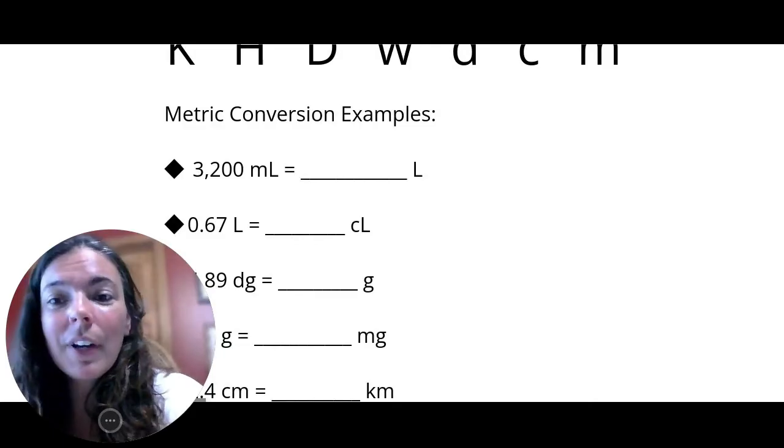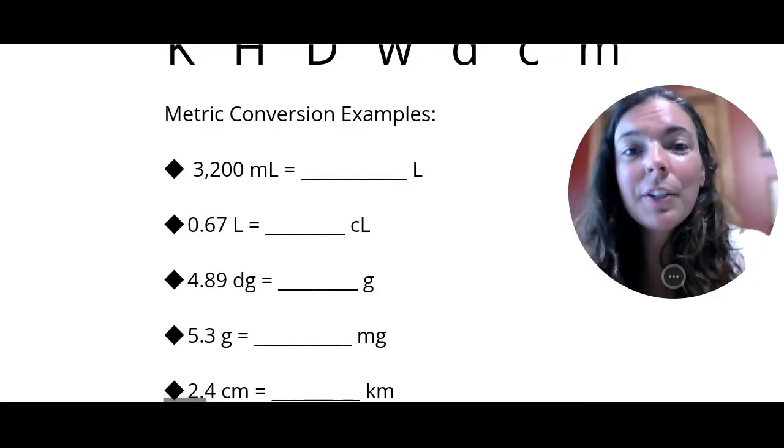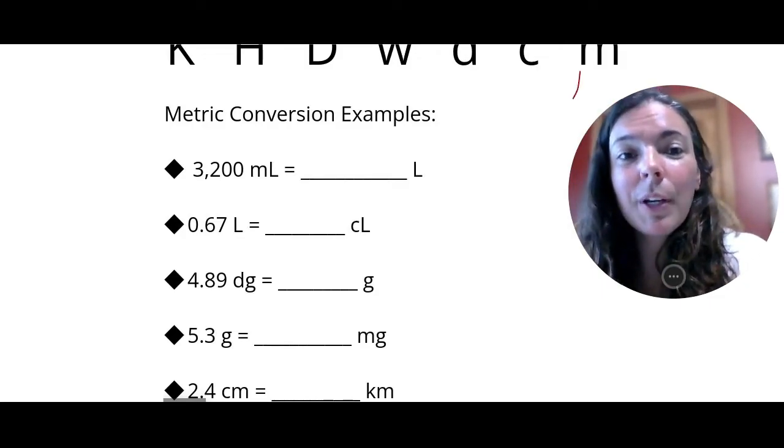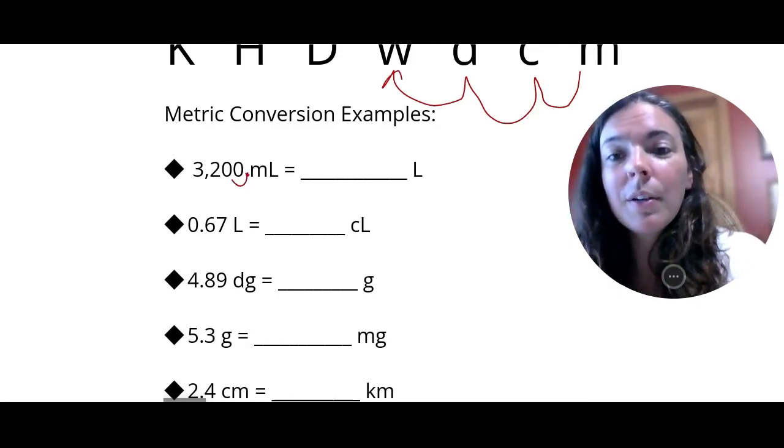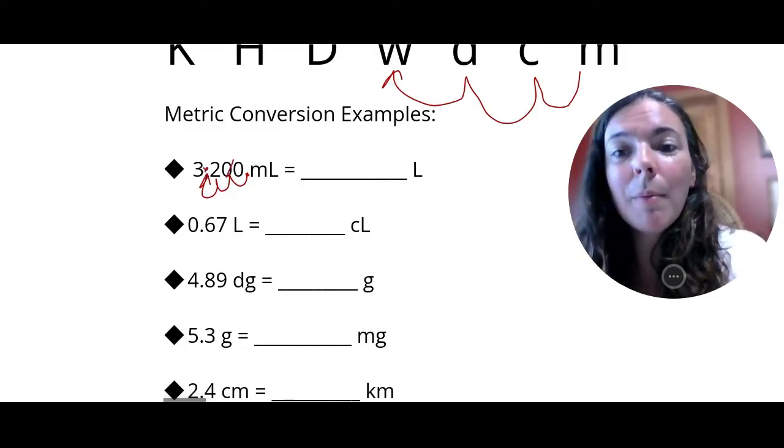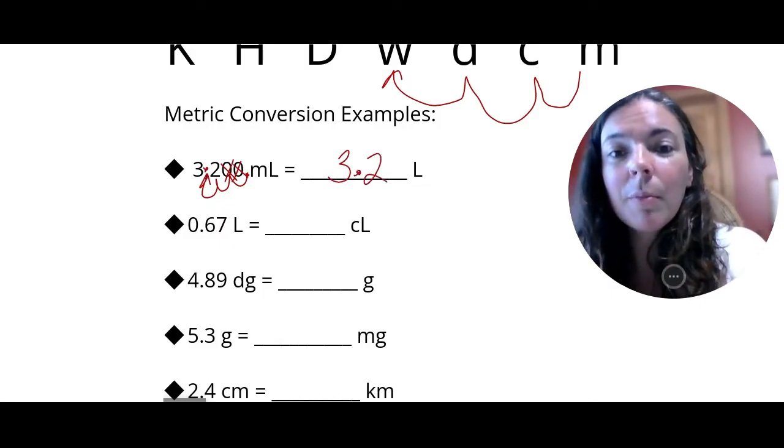Again, we've got King Henry died while drinking chocolate milk. Let's start with 3,200 milliliters. If I'm at milli and I need to go to my whole unit, I'm going to go one, two, three times to the left. So my decimal is here, one, two, three times to the left. So my decimal should end up right here. And remember, we don't want any trailing zero. So my final answer would be 3.2.